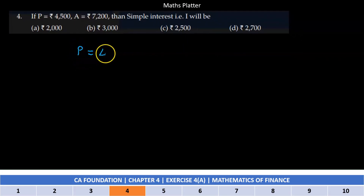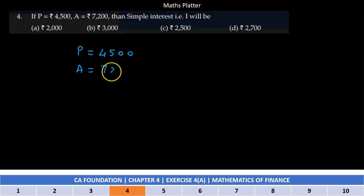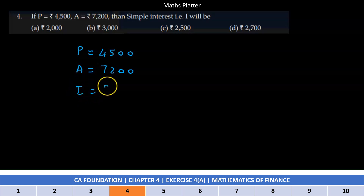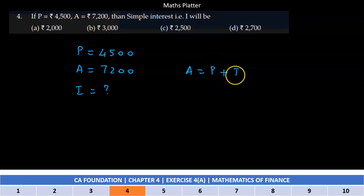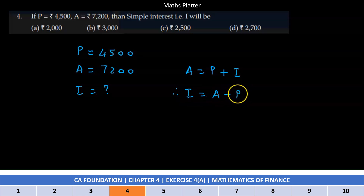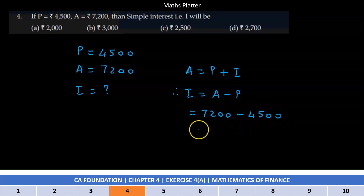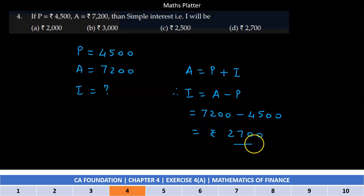If principal is Rs. 4,500 and amount hai 7,200, then the simple interest is? We know that amount is equal to principal plus interest. Therefore interest will be amount minus principal: 7,200 minus 4,500, jo aata hai Rs. 2,700, which is Option D.